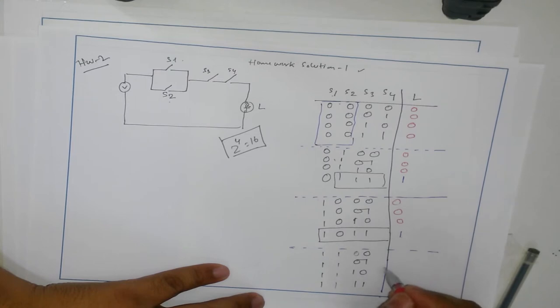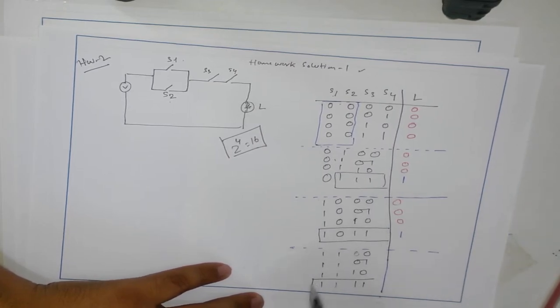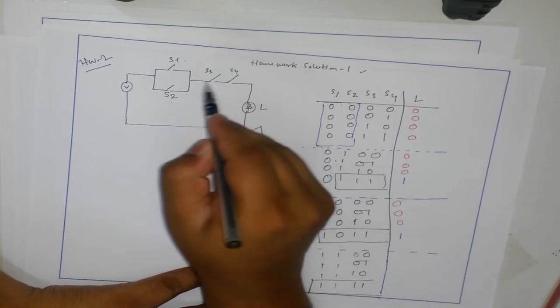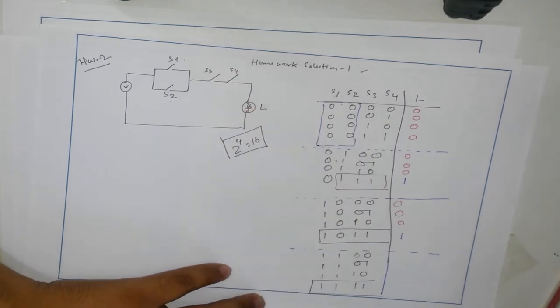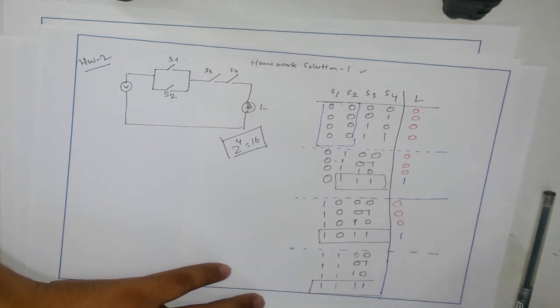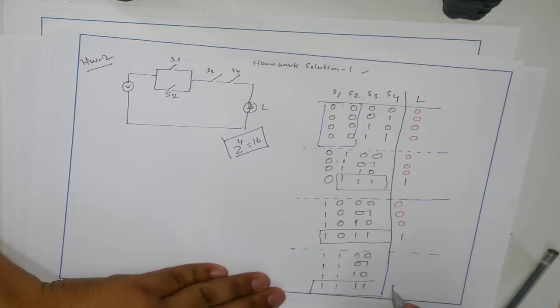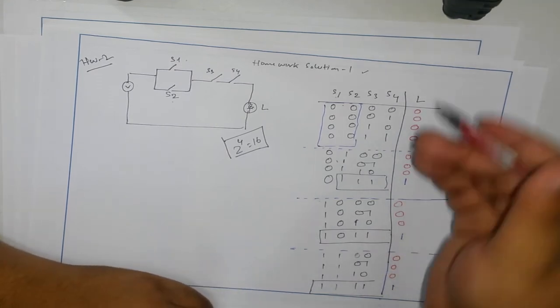And here, both of them are true. Doesn't matter, we only have to care about this one because both have to be true to switch the light on. So this one will only have one, and others will have zeros.